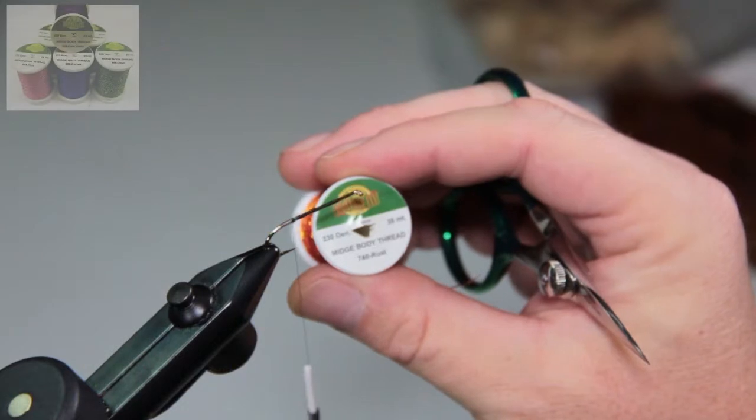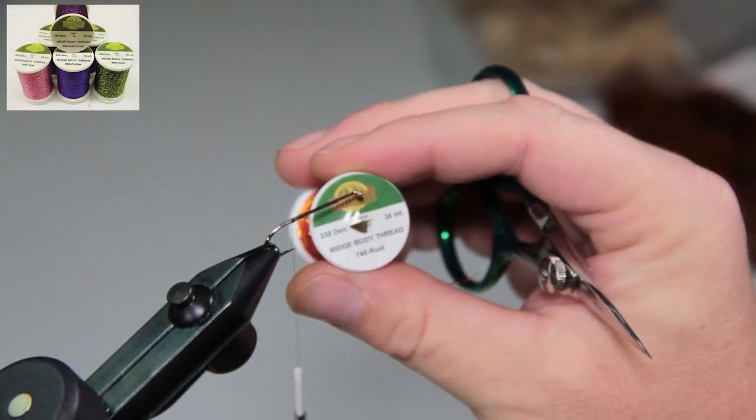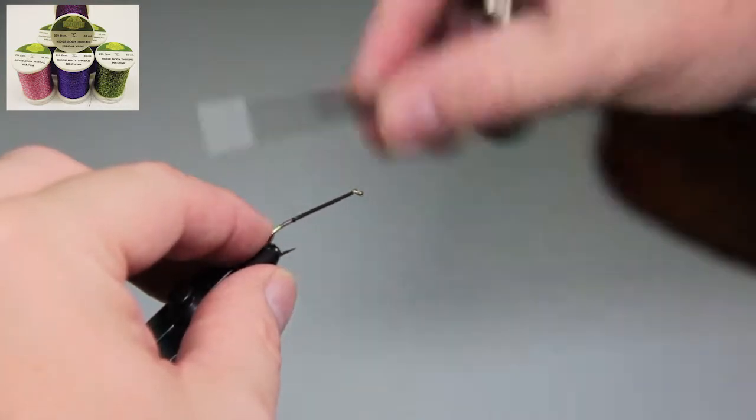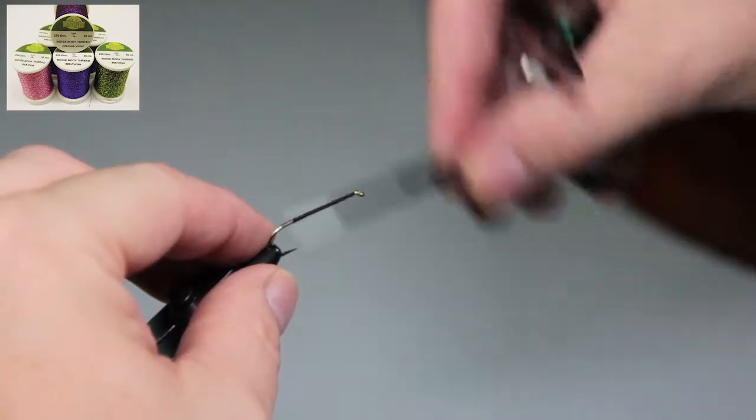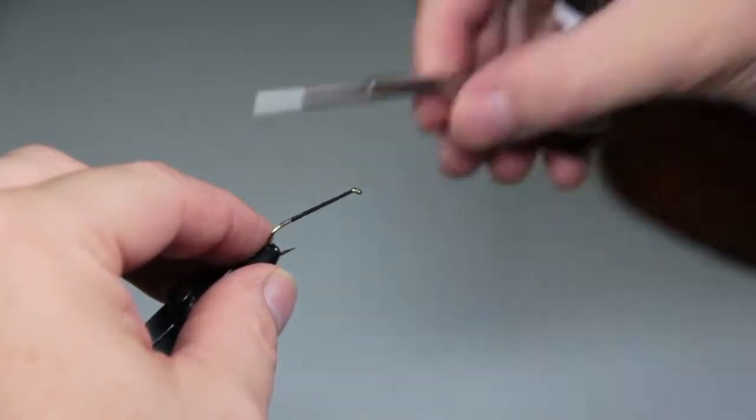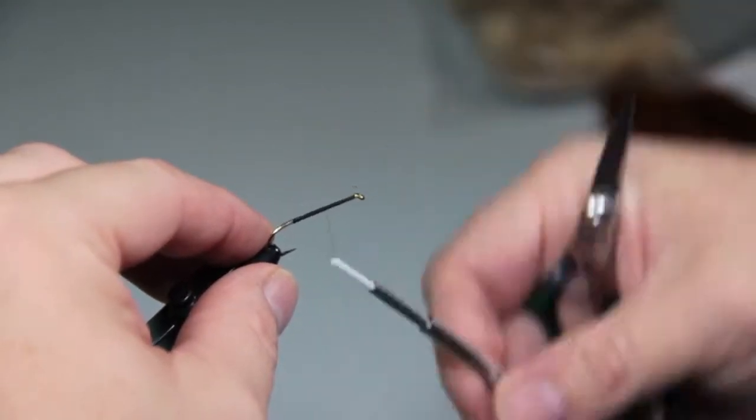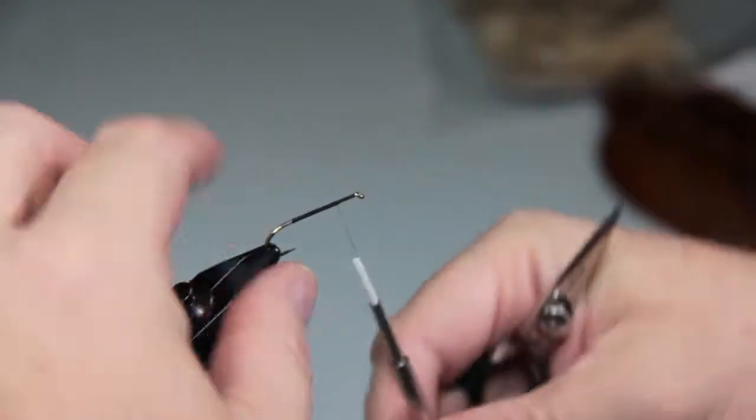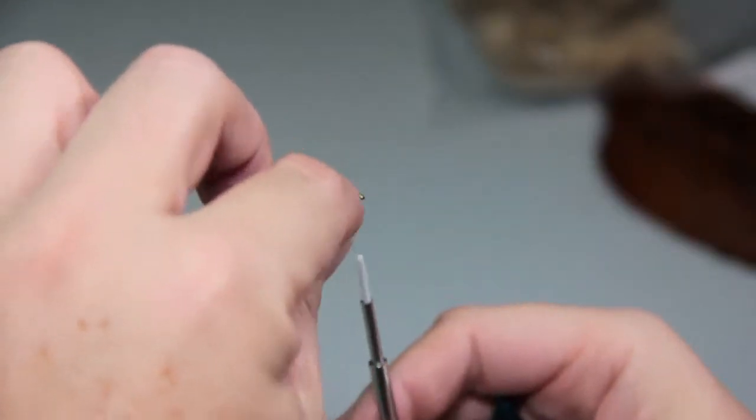The next step is a little bit of this midge body thread that's going to make the body for this muddler. It's a real slender body. This color happens to be called rust. I'm actually just going to coat the body of the shank of the hook with thread. That's going to make a nice base for putting this down.